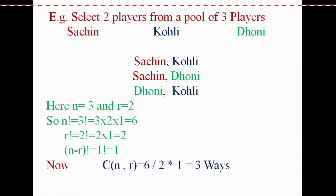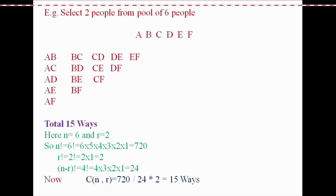For example, selecting 2 players from 3 players: n=3, r=2. So it is 3! divided by 2! times (3-2)! = 6 divided by 2 times 1 = 3 ways. For selecting 2 from 6: n=6, r=2. So 6! divided by 2! times 4! = 720 divided by 2 times 24 = 15 ways. This confirms our earlier manual count.